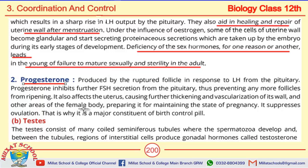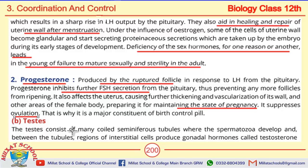Progesterone is in one way opposite to estrogen: estrogen comes from a ripening follicle, but progesterone comes from a ruptured follicle. Progesterone inhibits FSH so follicles do not ripen. It causes the uterus to thicken and undergo vascularization, and these conditions overall maintain the state of pregnancy. During pregnancy there is no ovulation. That is why progesterone is a major constituent of birth control pills — this may be asked in MCQ form.